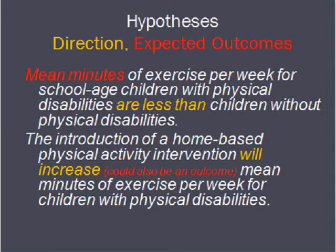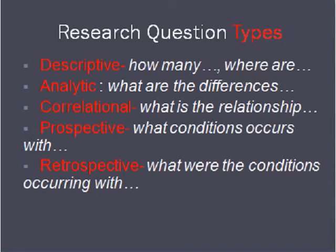When hypotheses have a direction and an expected outcome, you really want to give your readers a clear declaration of what you think is happening. For example: mean minutes of exercise for children with disabilities are less than children without, or the introduction of a physical activity intervention will increase mean minutes. So that's the difference between a hypothesis and a research question.